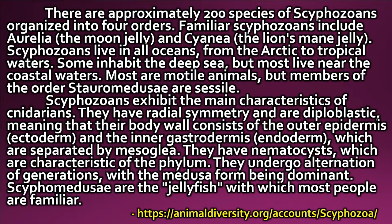Scyphozoans exhibit the main characteristics of cnidarians. They have radial symmetry and are diploblastic, meaning that their body wall consists of the outer epidermis (ectoderm) and the inner gastrodermis (endoderm), which are separated by mesoglea. They have nematocysts, which are characteristic of the phylum. They undergo alternation of generations, with the medusa form being dominant.